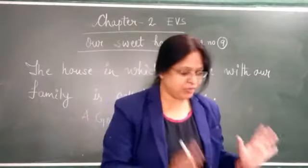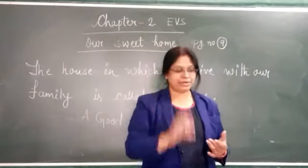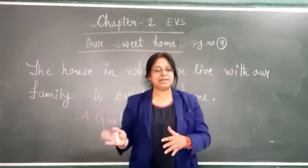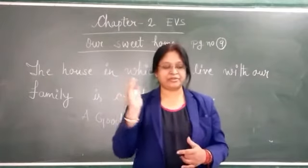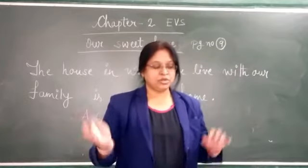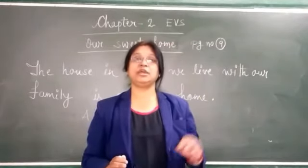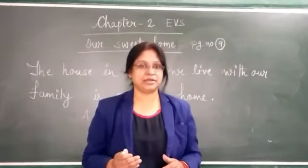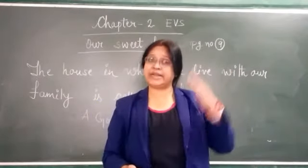This is the definition of a good home. Definition number one: you need to have proper ventilation. The second definition: a good home should allow sunlight and fresh air to come in. It is important to let sunlight and fresh air in as they kill germs in our home. You can see the proper sunlight coming in, along with fresh air.